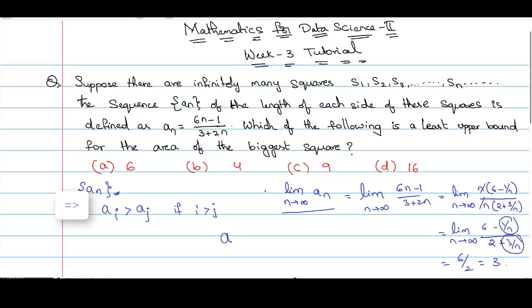Now, let us say ak be the length of a side of biggest square. Now, as we have found it out, ak will always be less than or equal to 3, which implies ak squared will always be less than or equal to 9. So, this ak squared is nothing but the area of the biggest square. Hence, we can conclude that area of any square in these squares will be less than or equal to 9.